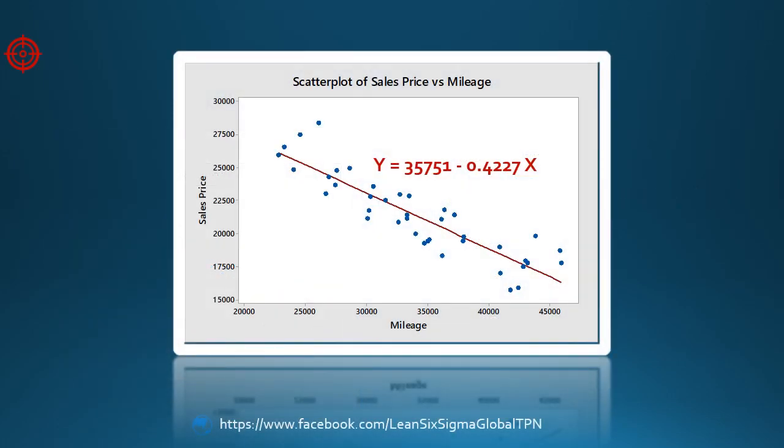What is the intercept of this equation? The intercept is 35,751 dollars. This means that when the mileage is 0, the regression equation predicts that the sales price will equal 35,751 dollars. The mileage of a leased car is unlikely to be over 0, so the intercept does not have much practical use in this case.